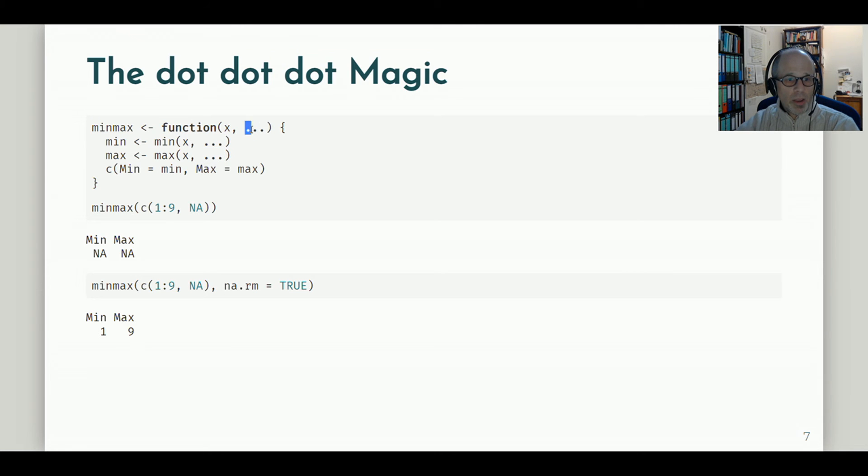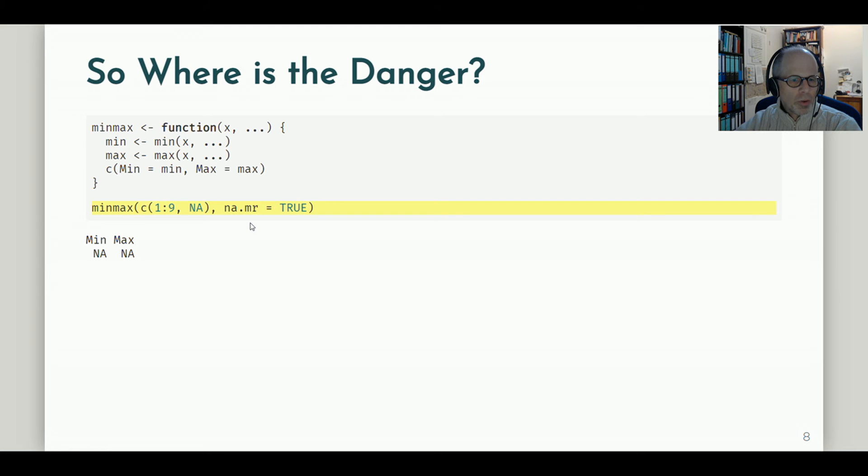We can teleport function arguments using the dot dot dot notation. So this is a great way of shortening our function and still make it flexible. But I said we will also talk about a danger. So what could go wrong? What could be a downside of this approach? Unfortunately we live in this world of compromises, where our benefits often come with downsides.